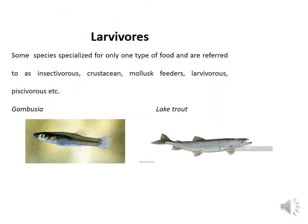Another feeding group of fishes is larvivorous. Some species are specialized for only one type of food and are referred to as insectivorous, larvivorous, or piscivorous. These species mostly feed on the larvae of crustaceans, mollusks, and different insects. Examples include gambusia and lake trout. The feeding behavior of gambusia and lake trout includes typically eating zooplanktons, mites, and mosquito larvae.